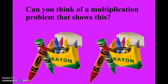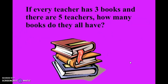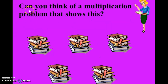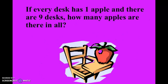So we have seven crayons and two boxes. Can you think of a multiplication problem that shows this? Seven crayons times two boxes equals fourteen crayons. If every teacher has three books and there are five teachers, how many books do they all have? You have three books and five teachers — can you think of a multiplication problem that shows this? Five teachers times three books equals fifteen books.